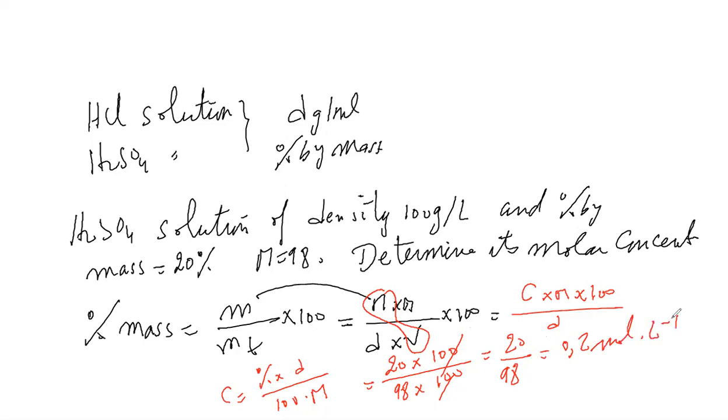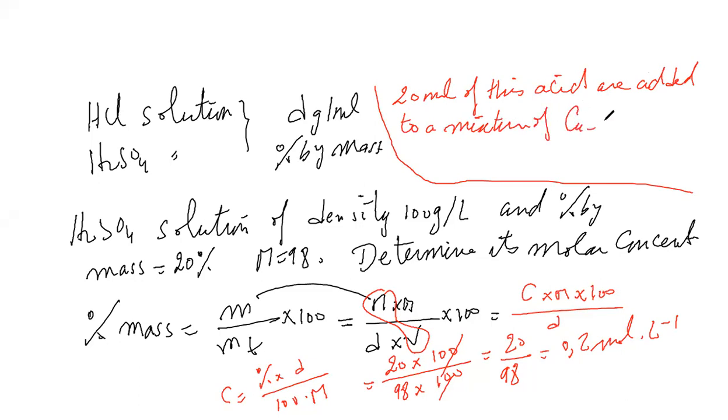M = 0.2 approximately. Now, I can tell you, for this solution, 20 ml of this acid are added to a mixture of Cu and Zn. Write the equation, like here, but it adds to me this. Do you understand?